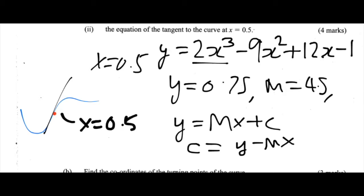So let's plug in our values for y, m and x to find c. So we know that y is 0.75. So we're going to do 0.75 minus 4.5 multiplied by 0.5, and we subtract all of that from 0.75. And when we do that, we get minus 1.5 as our c.